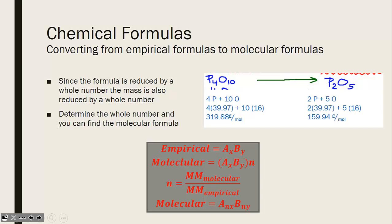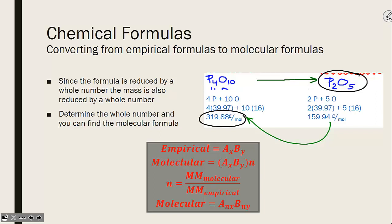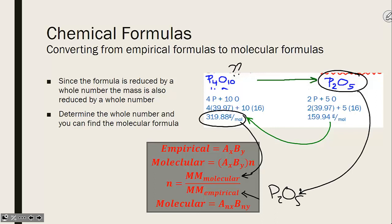Reducing a formula also reduces the molar mass. To go backwards from an empirical formula to a molecular formula, you need to figure out how much the molar mass was reduced by. The way this traditionally works: I give you the molecular formula's molar mass and the empirical formula, and you divide the molecular molar mass by the empirical formula's molar mass to find the factor.